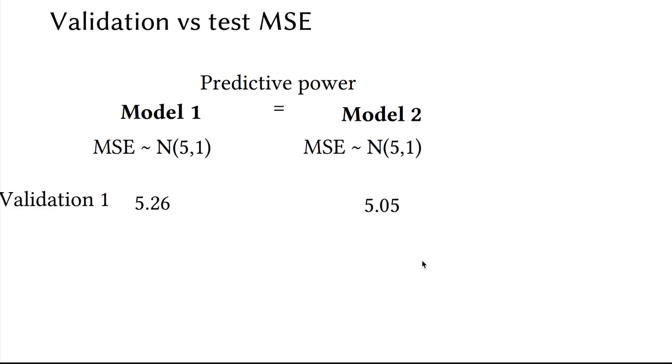We take a look at validation set number 1, and in this set of data, model 2 wins. It has the lowest errors. But we look at validation set number 2, or we take a third, fourth, fifth, and so on. We can continue.